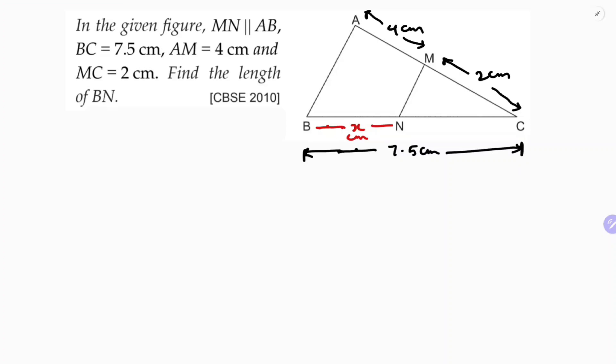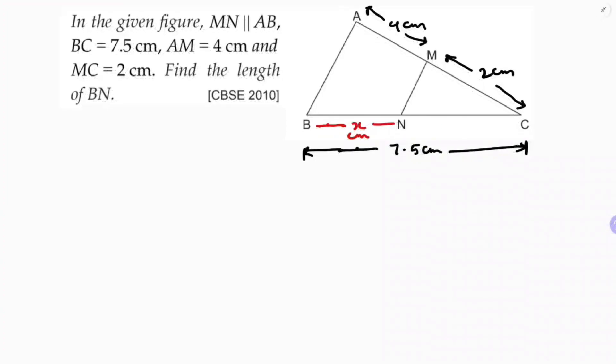I will consider BN as x cm. Since the total is 7.5 and BN is x cm, then CN will be 7.5 minus x.